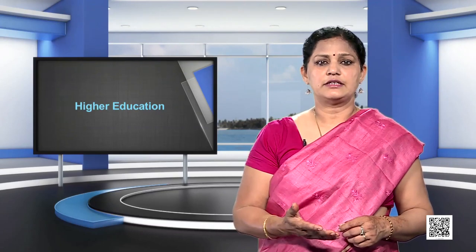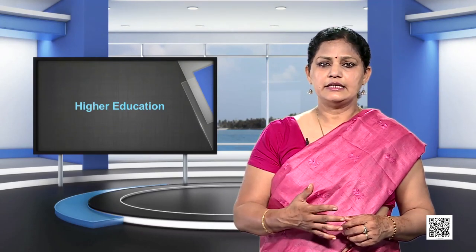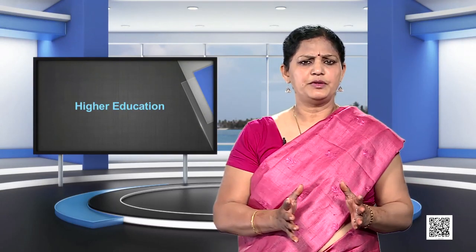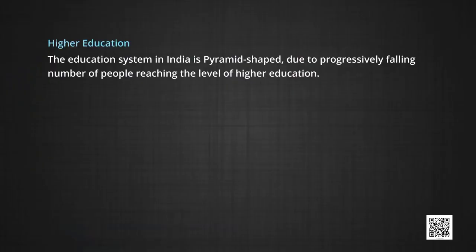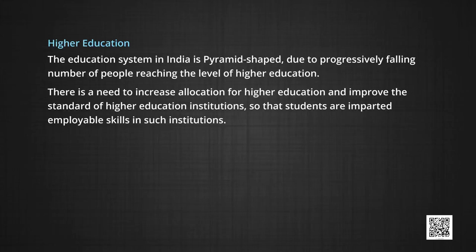Higher education is the most powerful tool to build a knowledge-based society for the future. The Indian higher and technical education system is one of the largest in the world, but the number of people reaching the level of higher education is very small. The education system in India is pyramid-shaped due to the progressively falling number of people reaching higher education. There is a need to increase allocation for higher education and improve the standards of higher education institutions, so that students are imparted with employable skills.